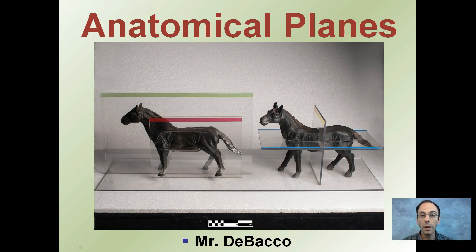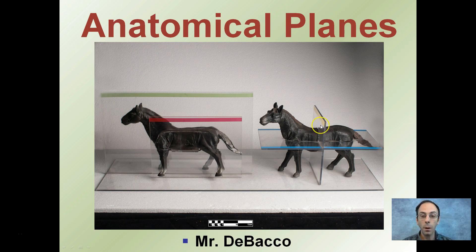Here I'm going to go over some of the anatomical planes of the body. It won't take very long, but this is something you should be reviewing and be able to recognize each of these. It's very important, especially when we get to dissections. You can see all these different planes here on these different horses — right now it just looks like a bunch of plates, but each of these has a particular name.